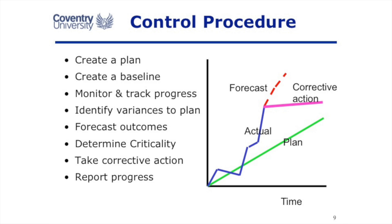When we've completed planning, we need to create a project baseline. We plan the project — this is what we think is going to happen — and it's an iterative process where our plan gets more and more refined. Eventually we say this is as close as I'm going to get to a good plan, and we copy all of it into a baseline. A baseline is a copy of the estimates: estimates of work, estimates of cost, estimates of duration. We copy those into a baseline and then enter the actual values. Things won't go exactly as planned — some things will be early, some late, some will cancel each other out — and you can compare what's actually happening with the baseline.